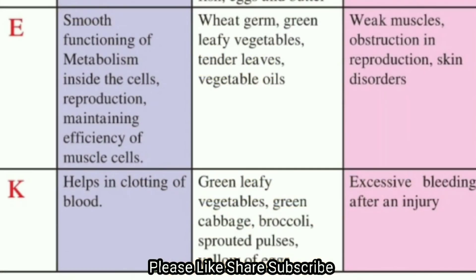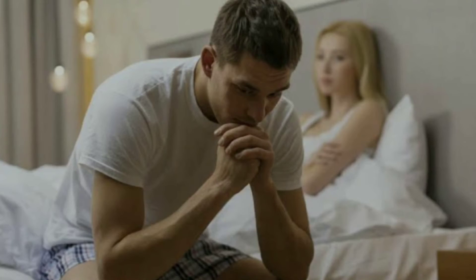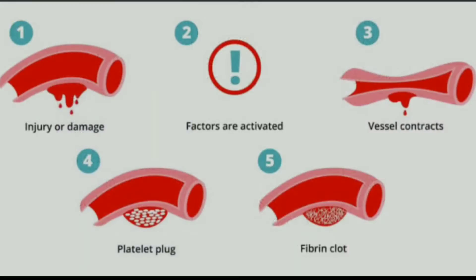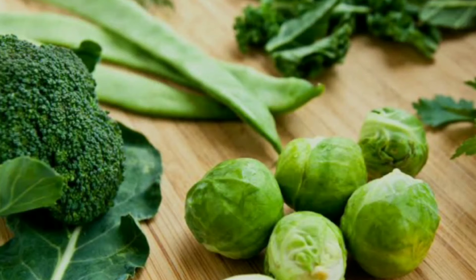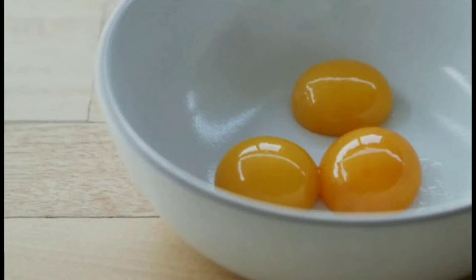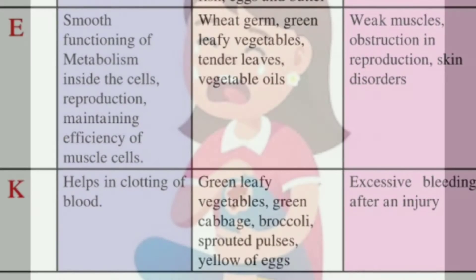Deficiency diseases of Vitamin E: weak muscles, obstruction in reproduction, and skin disorders. Vitamin K helps in clotting of blood. Sources: green leafy vegetables, green cabbage, broccoli, sprouted pulses, and egg yolk. Deficiency disease: excessive bleeding after an injury.